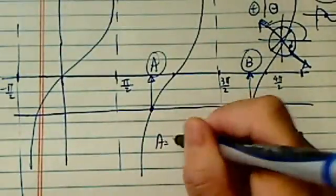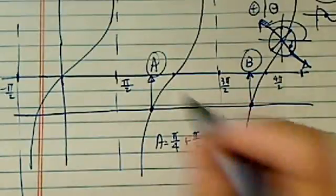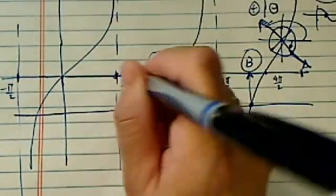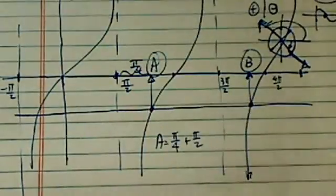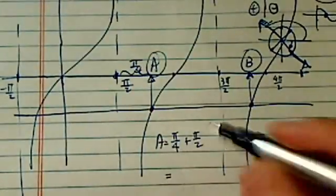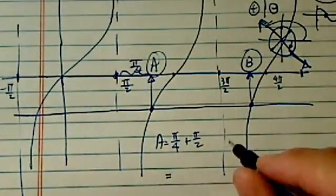So point A is 45 degrees away from pi over 2. So here's pi over 2. You're going to cover pi over 4 over. So basically this one is 45 degrees plus.